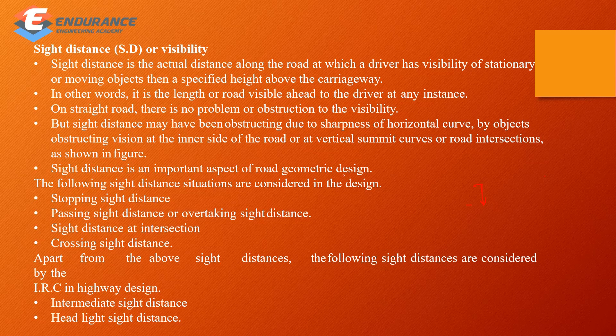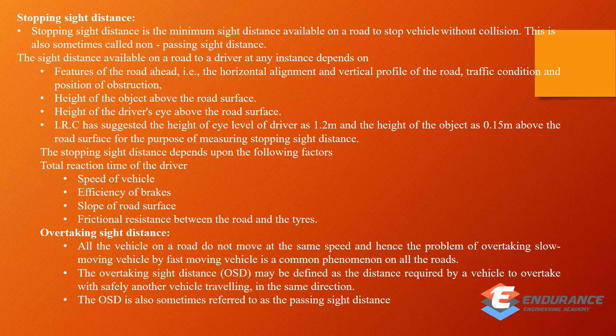Types of sight distance: stopping sight distance, passing sight distance, sight distance at intersections, and crossing sight distance. Apart from these, the IRC also includes intermediate sight distance and headline sight distance. For stopping sight distance, you can see a vehicle ahead and stop the vehicle safely — that is the stopping sight distance.